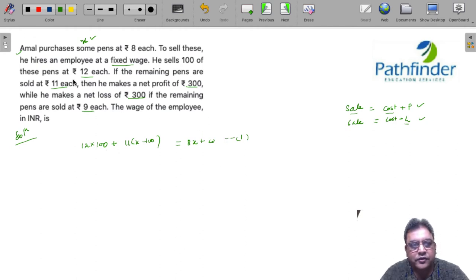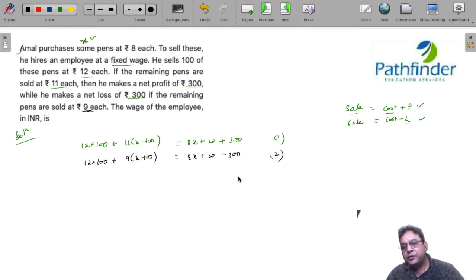There is a profit in this case, so I can write it as cost plus 300. This is equation 1. What about equation 2? Again, the sale is 12×100, but this time you're selling at ₹9 for each of the remaining items. So this equals cost, but there is a net loss.